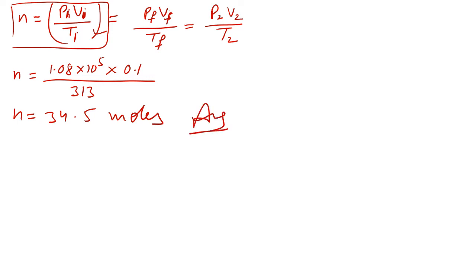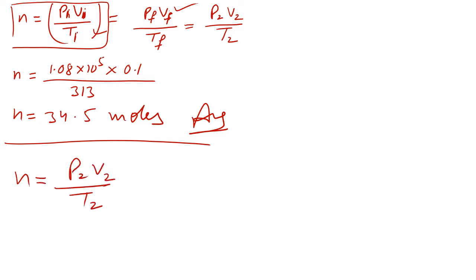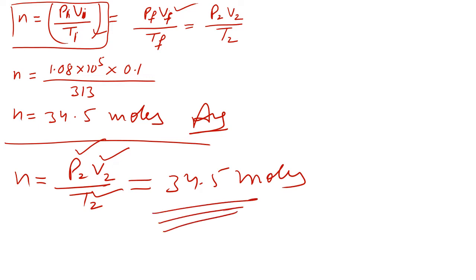This is the answer for part B. If you use the final values — P₂, V₂, and T₂ — in the same formula, you will get the same answer of 34.5 moles. There is no difference using initial or final values.